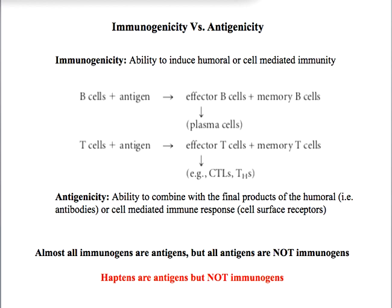Antigenicity is a phenomenon defined by the ability of a molecule to combine with the final products of the humoral or cell-mediated immune response, regardless of whether they can induce immunity or not. If antibodies are produced, an antigen should be able to bind to that antibody or immunoglobulins or the B-cell receptor. In the case of T-cells, an antigen should be able to bind with the T-cell receptor coupled with an MHC molecule.